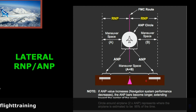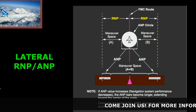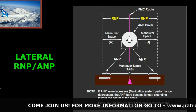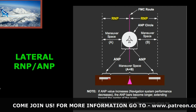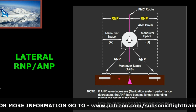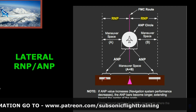If ANP equals RNP, your accuracy is such that you're not able to maintain the required navigation performance. Typically you'll see them with separation — depending on what the ANP is, the bars will be small or a little bigger. The less accurate they are, the more they move in; the more accurate they are, they move out.